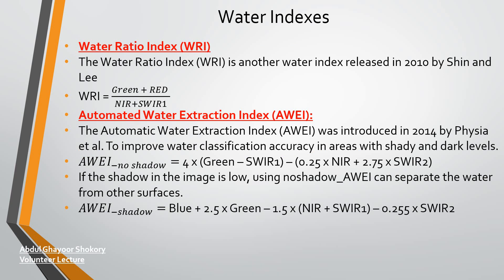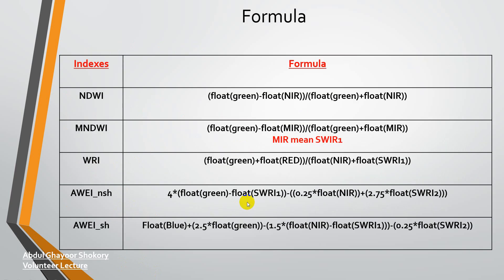The last index is AWEI — the Automated Water Extraction Index — developed by Feyisa in 2014. It has higher accuracy and is divided into two parts: AWEInsh (with no shadow) and AWEIsh (with shadow). You can see both formulas on screen. This final slide also shows all five formulas that will be used in the practical part.